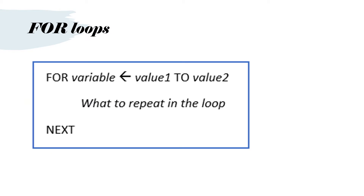Today we're going to learn about FOR loops. This is the general way a FOR loop looks. We would have FOR, then a variable. Then we've got the arrow, which means the assignment arrow. Then we would put a value — value 1 to value 2. So if we put 1 for value 1 and 10 for value 2, we would count from 1 to 10 as we repeat whatever is in the middle — what to repeat in the loop. At the bottom of the loop we would put NEXT, and that needs to be neatly lined up with the FOR.